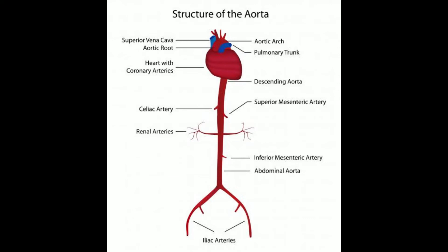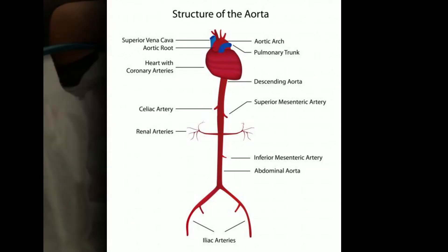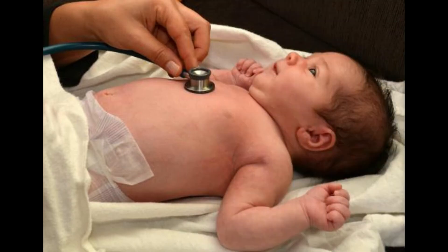Symptoms of aortic root enlargement include back and abdominal pain, leg pain and numbness due to nerve compression, and clammy skin. This is a very serious condition that can lead to chronic aortic valve regurgitation, and immediate medical attention is required.